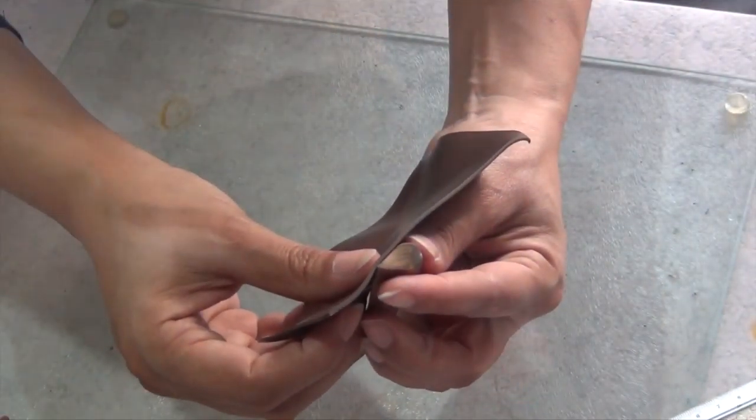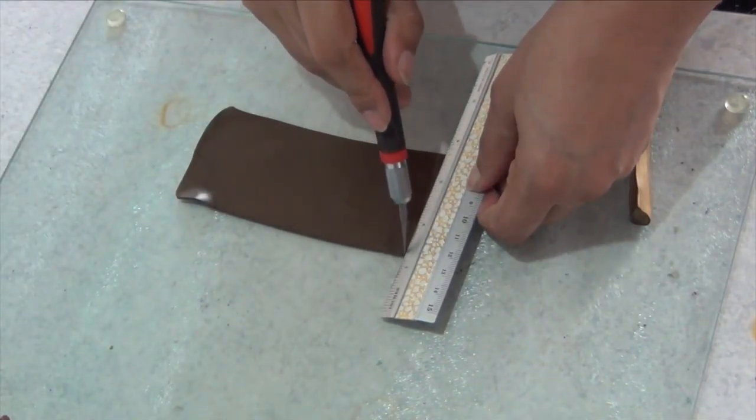But before I do this, I want to wrap my cane into another sheet of brown to make the finishing touch.